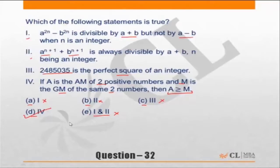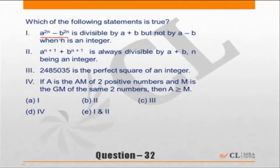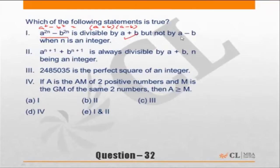To check statement 1 — a to the power 2n minus b to the power 2n is divisible by (a+b) but not (a−b) — I'll take n equal to 1. This becomes a² minus b², which equals (a+b)(a−b). So it is divisible by (a+b) and also by (a−b). Therefore statement 1 is incorrect.